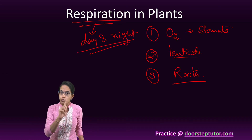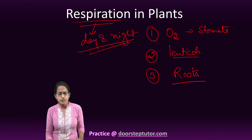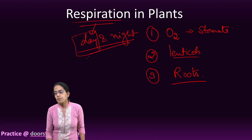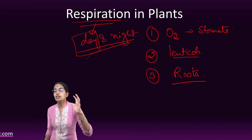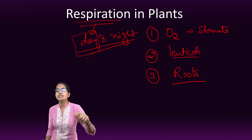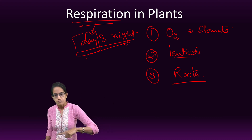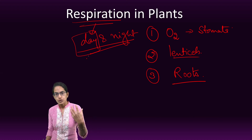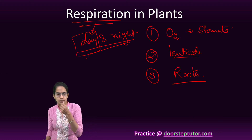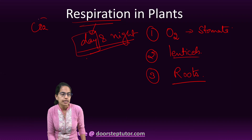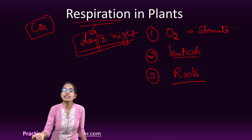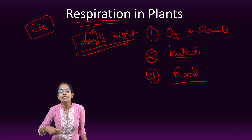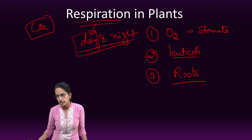Photosynthesis occurs only in the day and requires chlorophyll. However, respiration is a process that occurs day and night. During the day, photosynthesis is in progress, so oxygen is produced and this oxygen is utilized for the process of respiration. At night, only oxygen gets utilized for respiration and carbon dioxide is released. Therefore it is advisable not to sleep under trees during night time because there is accumulation of carbon dioxide under the trees.